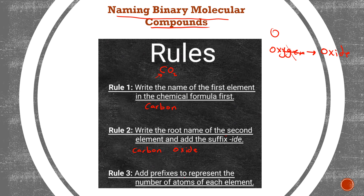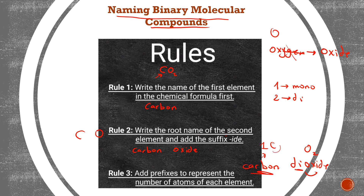Rule 3: add a prefix to represent the number of atoms of each element. We put a number to show how many atoms are present. So 'one' means mono and 'two' means di. The name becomes 'carbon dioxide' — 'di' meaning I have two oxygen atoms, and 'carbon' meaning I have one carbon. That's exactly what we have in CO2.